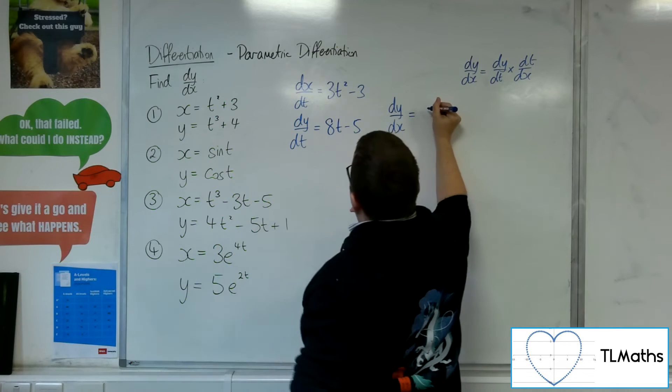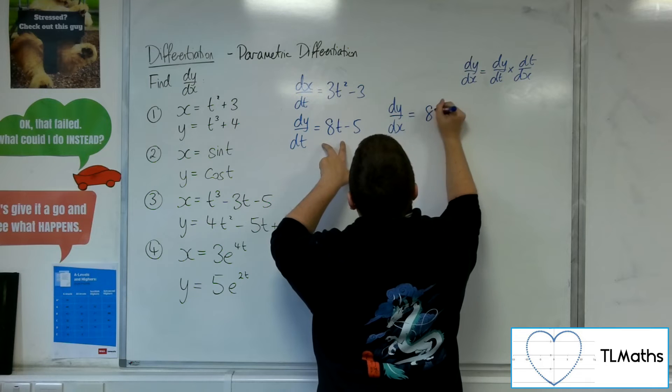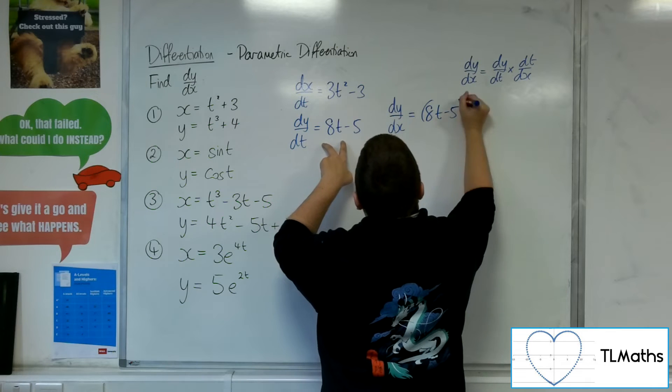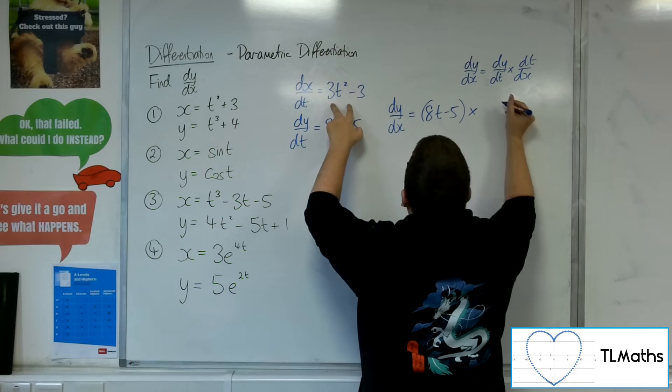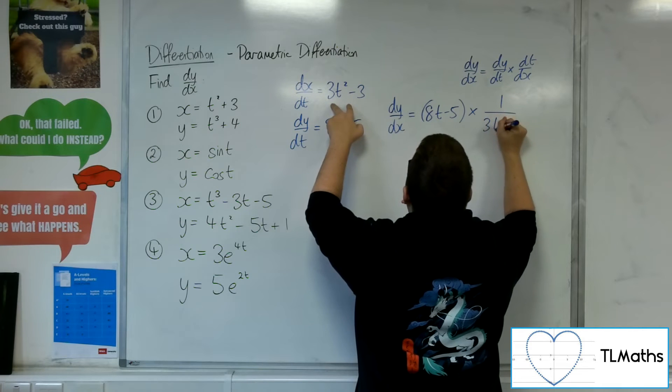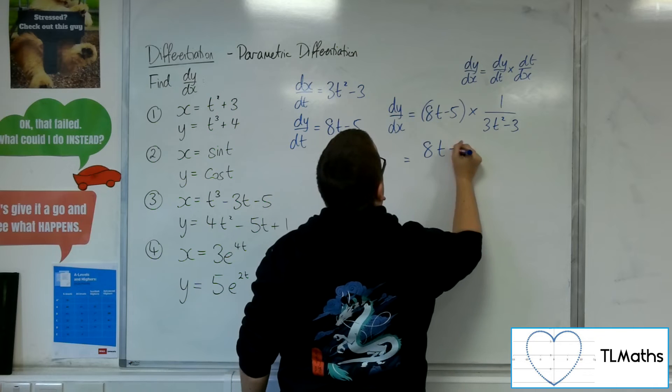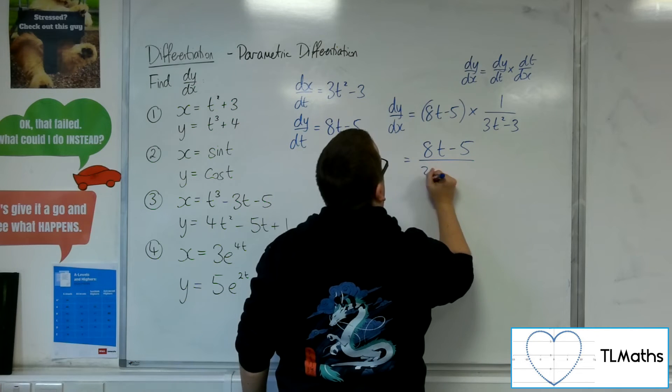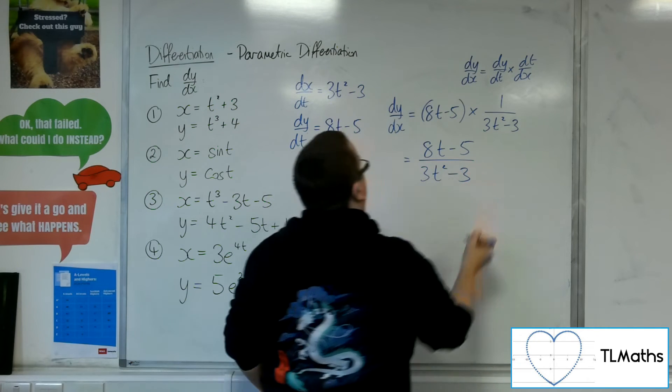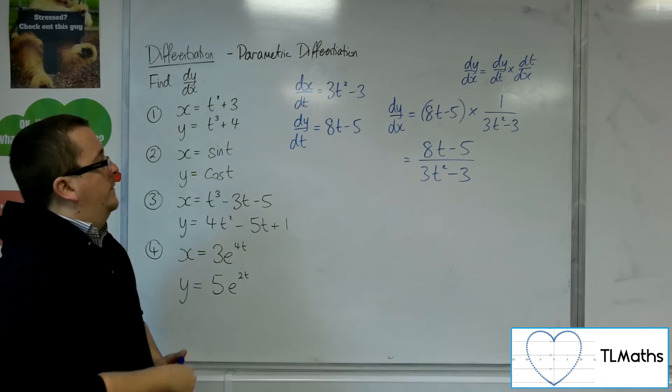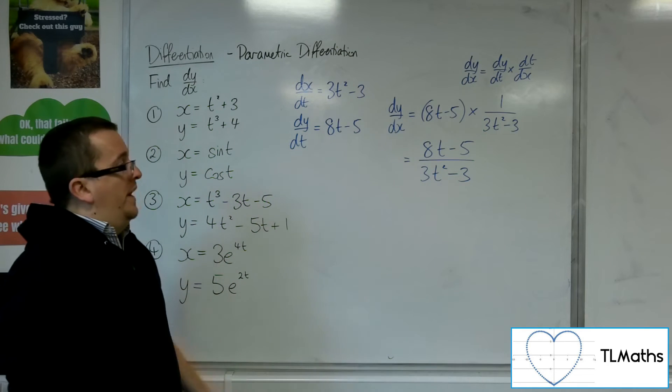So dy by dx is dy by dt times by dx by dt. So 1 over 3t squared minus 3. So that leaves us with 8t minus 5 over 3t squared minus 3. That's really all I can do with that one.